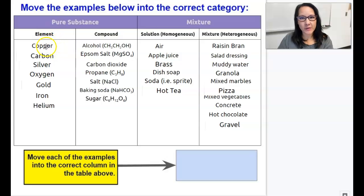So under the elements column, you should have copper, carbon, silver, oxygen, gold, iron, and helium.